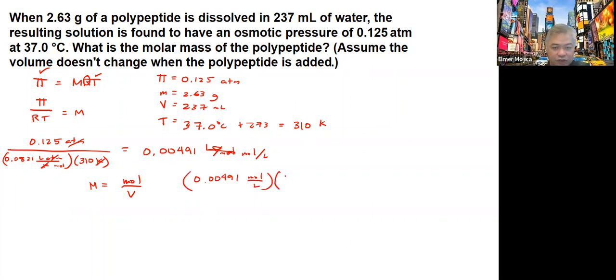Cross multiply, so you have 237 mL over 1000 because we're going to 0.00491 mols per liter. That will give us around 0.00116 mols.